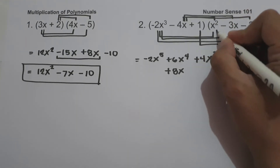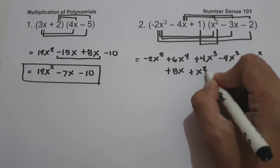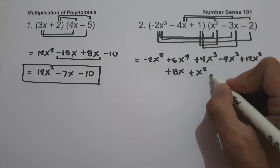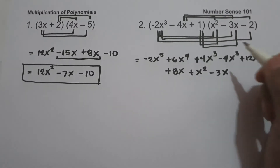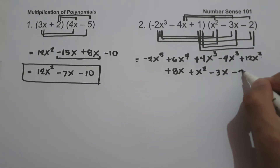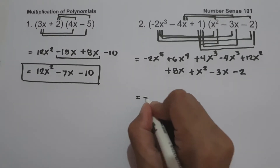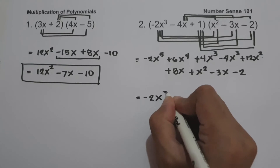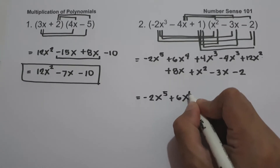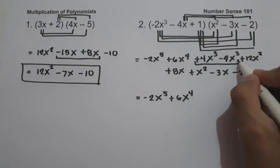Then 1 multiplied by x squared is x squared. 1 multiplied by negative 3x is negative 3x. And 1 multiplied by negative 2 is negative 2. So let us combine like terms: negative 2x raised to 5, then 6x raised to 4, then 4x cubed minus 4x cubed.